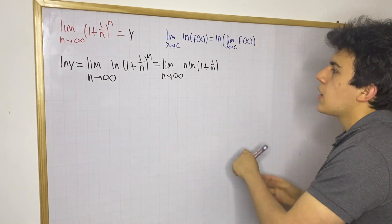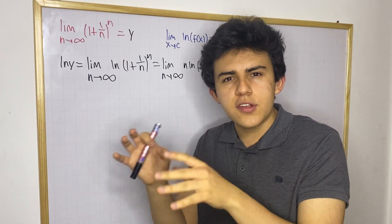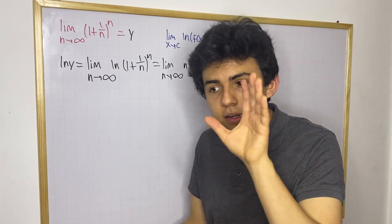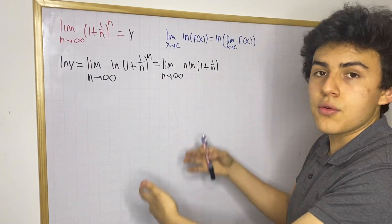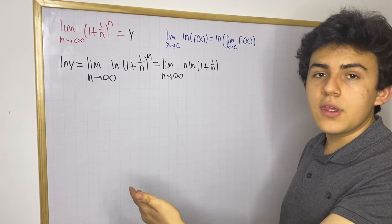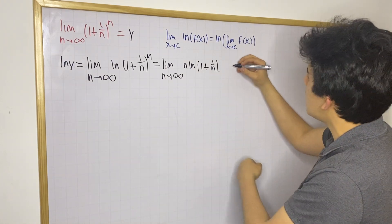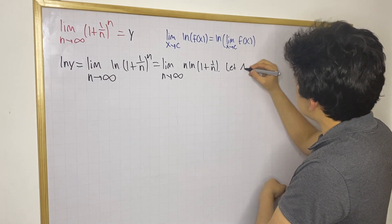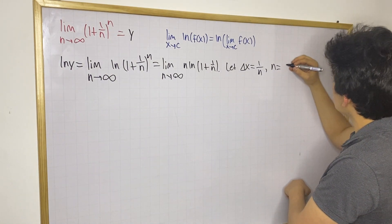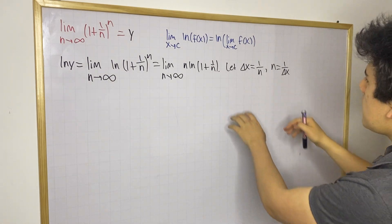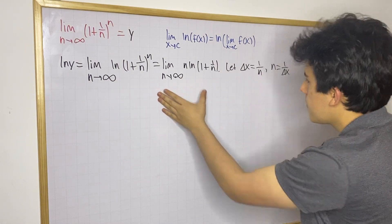Now, what you want to do is the following — this is where things might get a bit tricky. If you have seen other proofs before, you know there is something tricky they do with the derivative of the natural log, and here's where we're going to do that. So basically, when you have this form, something you want to do is to write this expression as a derivative. To do that, let delta x be equal to 1/n, so that n is equal to 1/delta x.